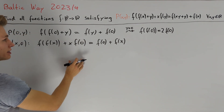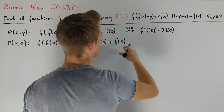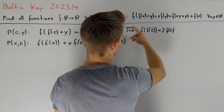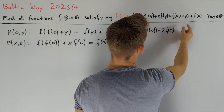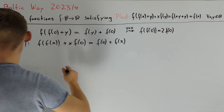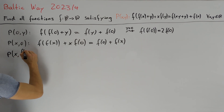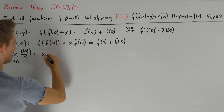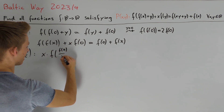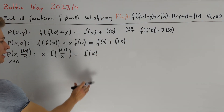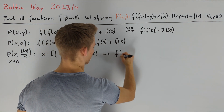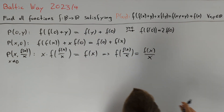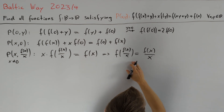We want to try another approach. It's often a good idea to choose the variables such that two arguments are equal. We can do this by setting y = f(x)/x, which makes two arguments equal. So, for x ≠ 0, substituting gives us x·f(f(x)/x) = f(x). Dividing both sides by x, we get f(f(x)/x) = f(x)/x, meaning f fixes the value f(x)/x.